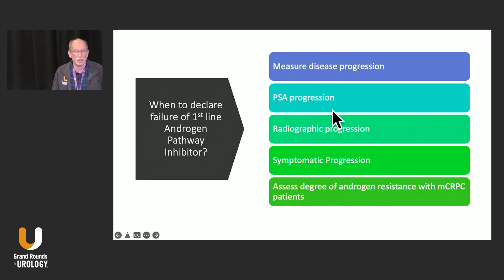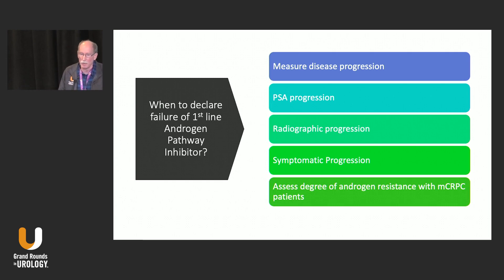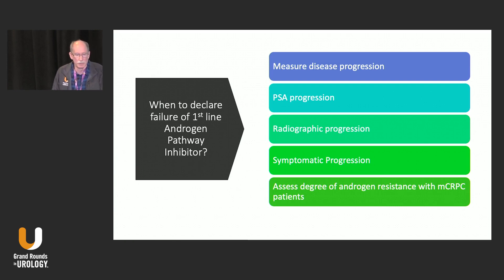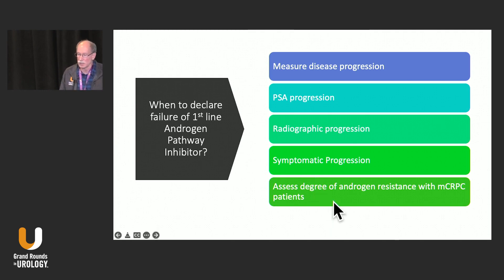Another question I get a lot is when to declare failure of first-line androgen pathway inhibitor. It really boils down to adequately measuring disease progression — either PSA progression, radiographic progression, or symptomatic progression. Patients really focus on PSA progression, but of these three it's really the least important. We need to resist the temptation to bail out on a first-line therapy that's working just due to PSA progression alone.